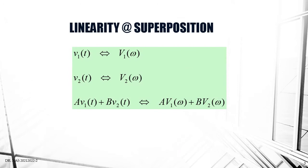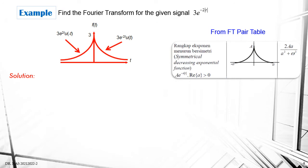When you have a signal v1(t), you'll have V1(ω) in the frequency domain. If you have v2(t), you'll have V2(ω) in the frequency domain. But if you have a combination of two signals, a·v1(t) plus b·v2(t), you'll have the same scaling factor and same operation in frequency domain. That is called superposition.